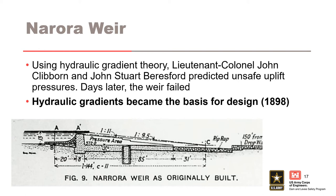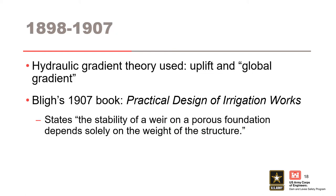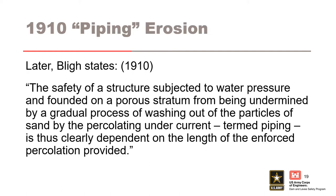While hydraulic gradient theory was used and formed the basis for design, the focus was really only on uplift of the structure based on the global gradient. This is clearly reflected by the 1907 edition of Bligh's book, which contains the statement: 'the stability of a weir on a porous foundation depends solely on the weight of the structure.' However, only a few years later, the concept of piping is formally recognized and introduced for the first time in 1910 — the first recognition of internal erosion as a failure mechanism that must be designed against.